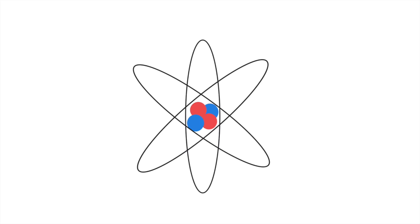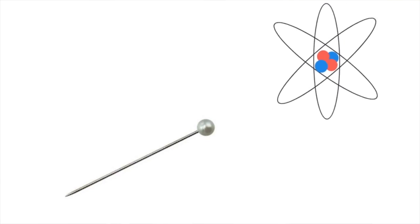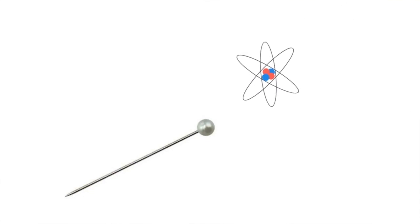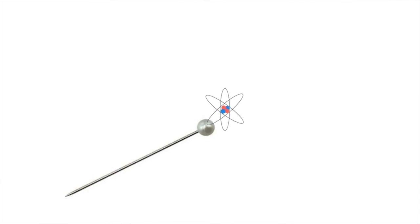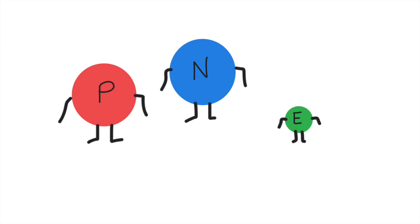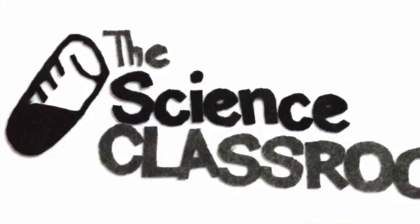You've probably come across this little guy at some point in your life. It's the fundamental building block of all matter, and it's really tiny. Millions of these things could fit on the head of a pin, and it's composed of even tinier things, called protons, neutrons, and electrons. This lesson is all about the atom.